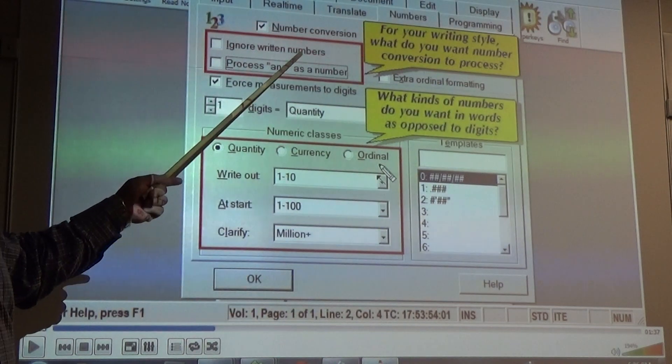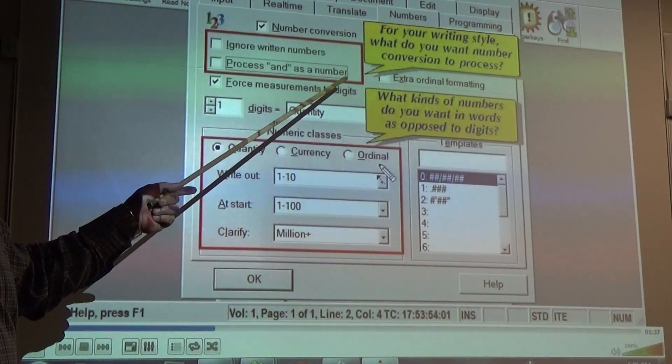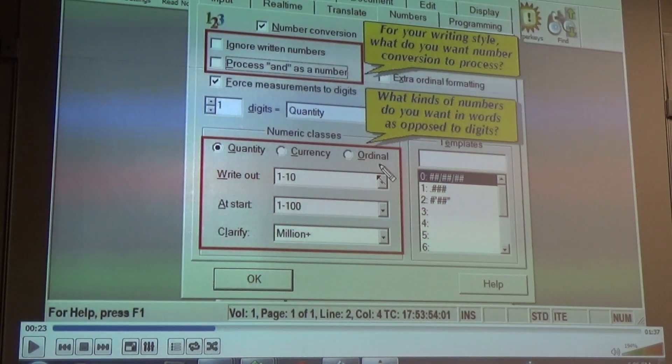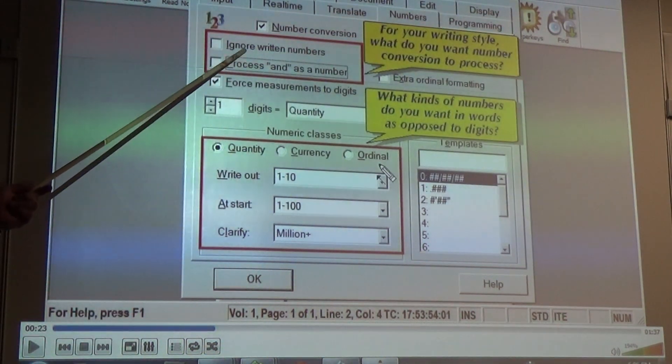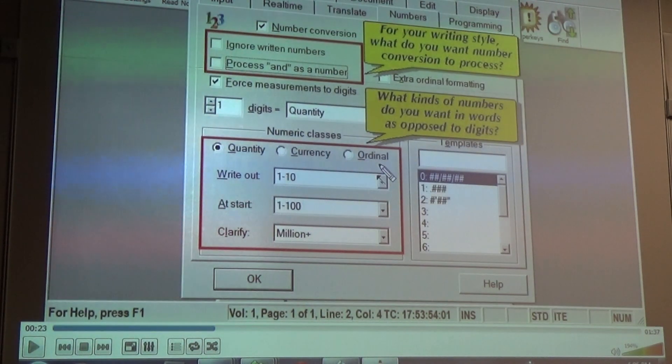So if you want to ignore written numbers, if you write out your numbers but you want them in written form, then you need to click that bar. And some people do. That's how they write their numbers. I use the number bar. Do you all use the number bar? Sometimes. I write mine out. So you're saying that I wouldn't click on the ignore written numbers. I write mine out. Like, I have one stroke for every number, for one through a hundred. Wow. So how would I do that? It's going to tell you here in a bit.